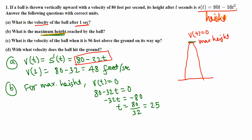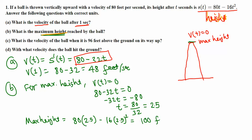That 2.5 seconds is not the answer — it's the time required to reach maximum height. Now we plug this time into the original height function to find the maximum height. Maximum height equals 80 times 2.5 minus 16 times 2.5 squared. Using a calculator, that comes out to 100 feet. So the maximum height is 100 feet.